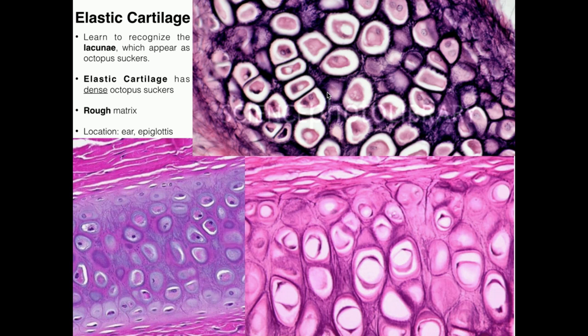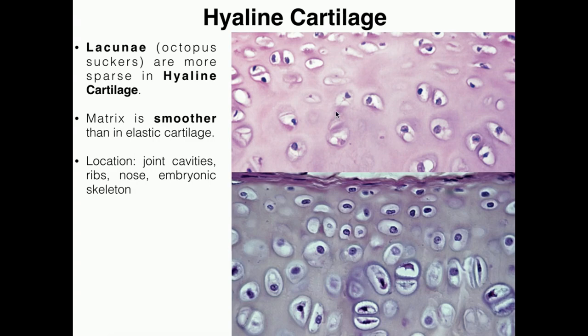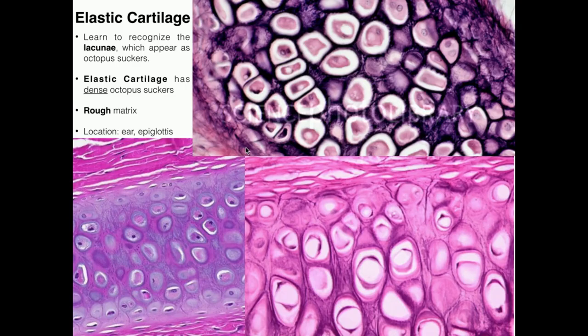The question is, how do you determine what type of cartilage it is? In terms of elastic cartilage, there are two general ways to look at it. The first way — and there can be some exceptions — but in general, in elastic cartilage these octopus suckers, or lacunae, are actually much more dense and more tightly packed. If you compare how tightly packed they are in this image versus the next one, hyaline cartilage, you'll definitely see that in elastic cartilage these lacunae are a lot more tightly packed and more dense.